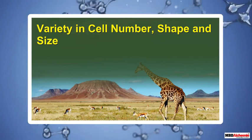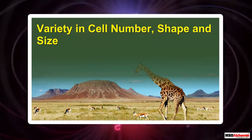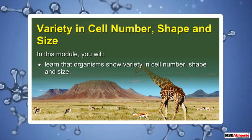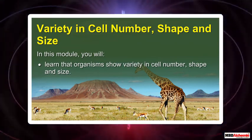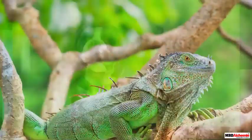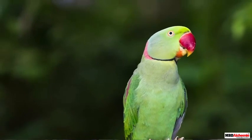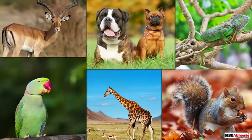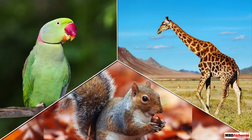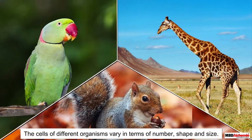In this module you will learn that organisms show variety in cell number, shape, and size. There are millions of living organisms found on Earth, and all living organisms are different from each other in many aspects. For example, they differ in their shapes and sizes. Not only do the organisms vary in shape and size, but the cells of different organisms also vary in terms of number, shape, and size.